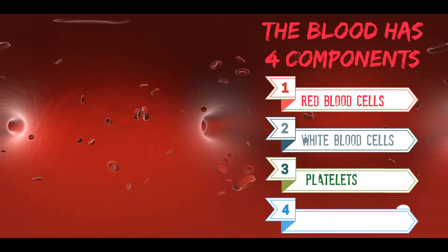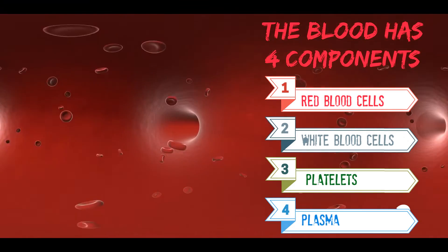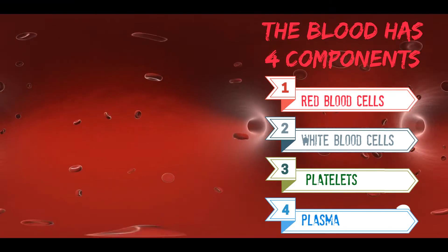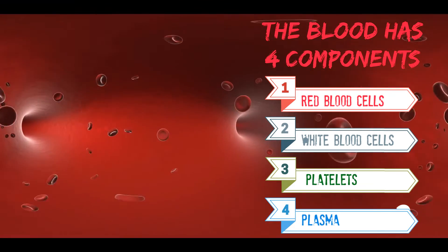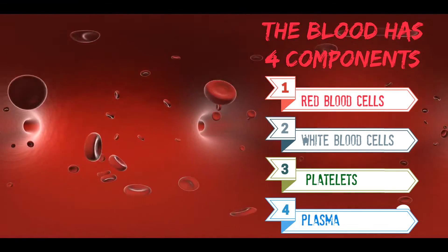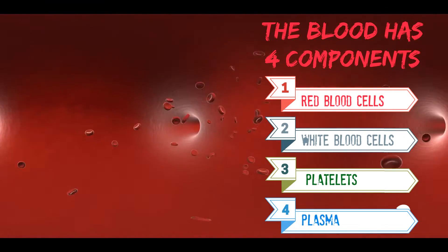The blood has four components: red blood cells, white blood cells, platelets, and plasma.